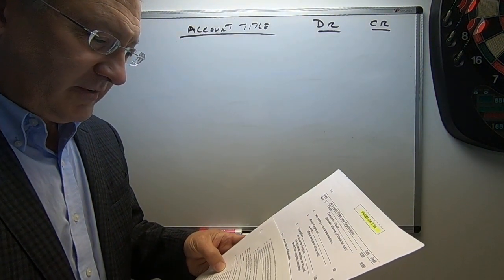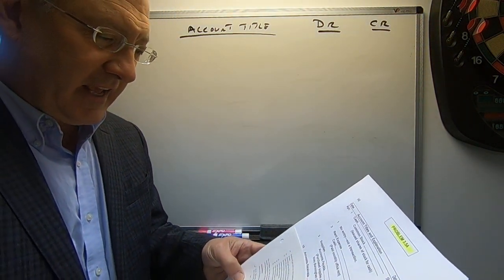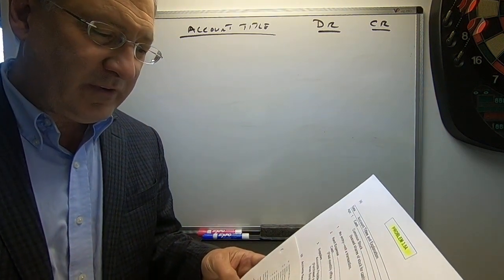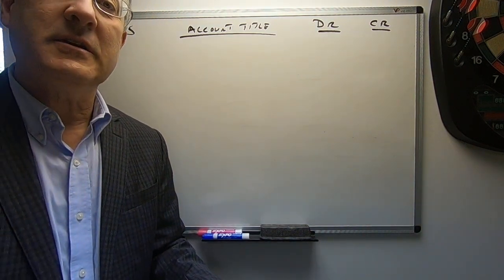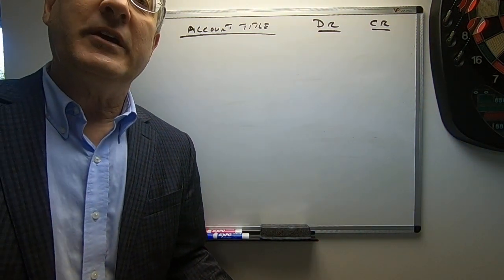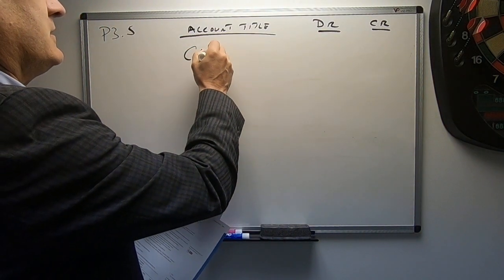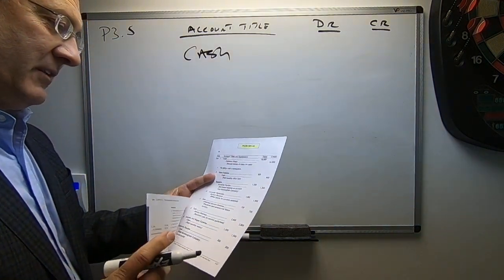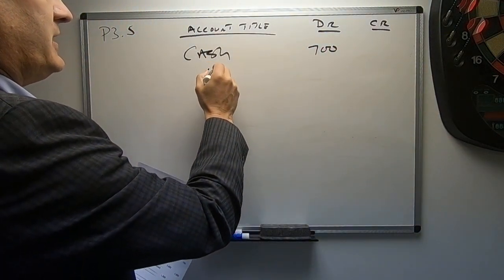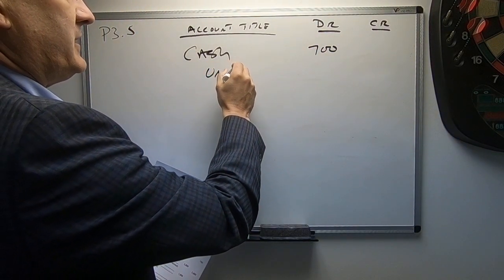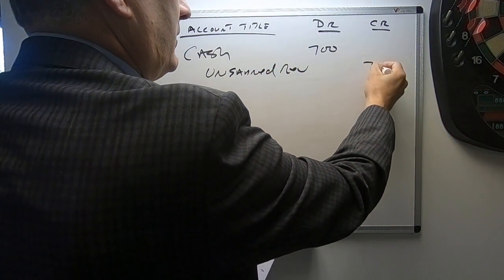The next transaction: received $700 cash advance from M. Janssen to design a new home. They received cash in advance of doing some work, so they're going to have an obligation to perform. They're going to debit cash for $700 and credit the liability unearned revenue for $700.